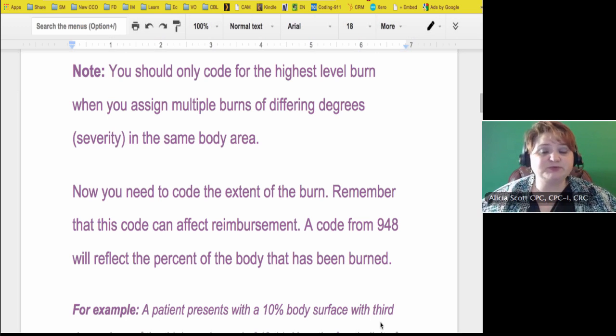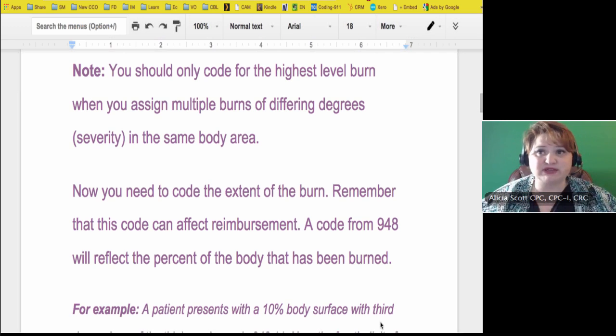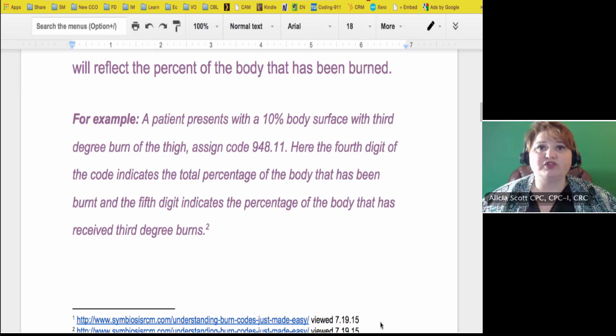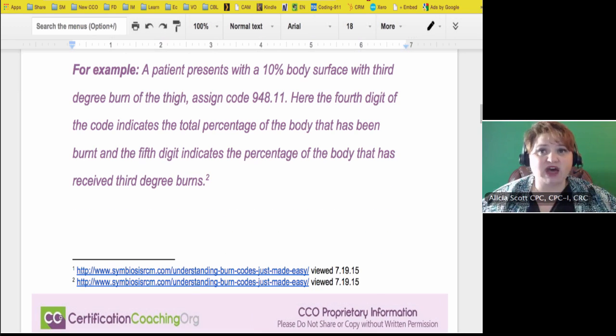Another example: a patient presents with a 10% body surface with third-degree burns and third-degree burns of the thigh, you assign code 948.11. Here the fourth digit of the code indicates the total percentage of the body that has been burnt and the fifth digit indicates the percentage of the body that has received the third-degree burn. That's how that code is laid out.